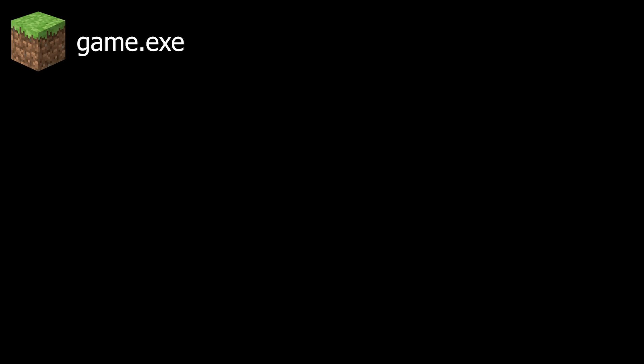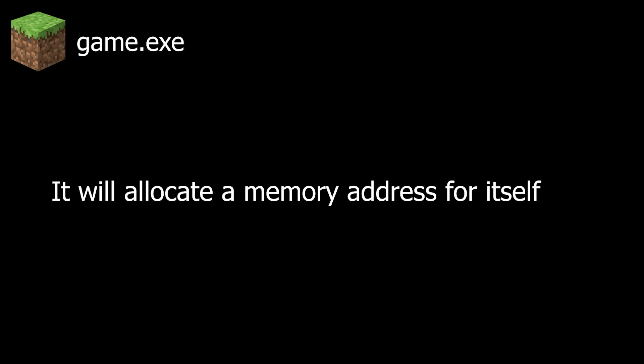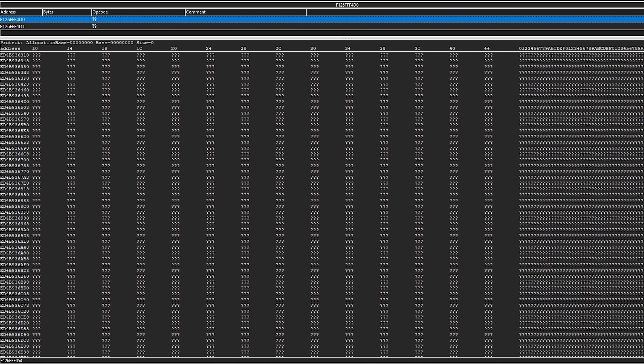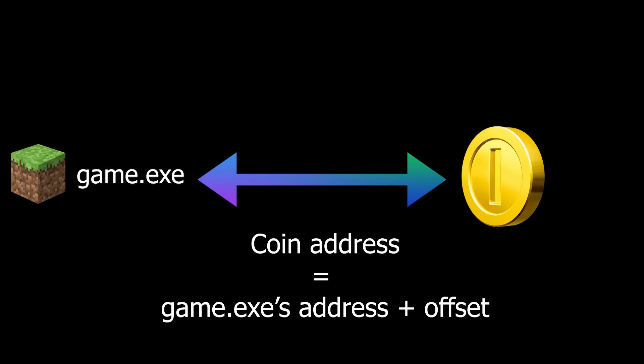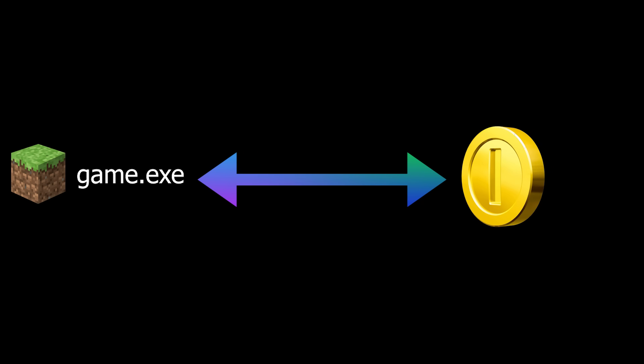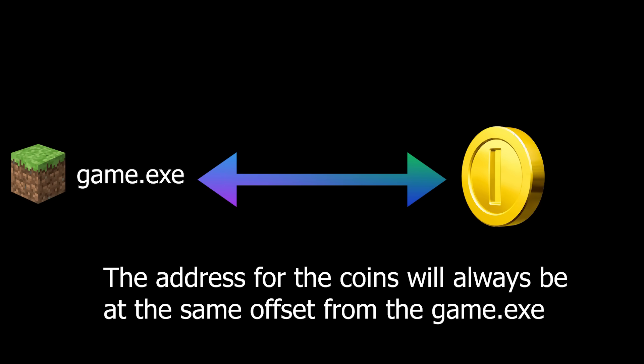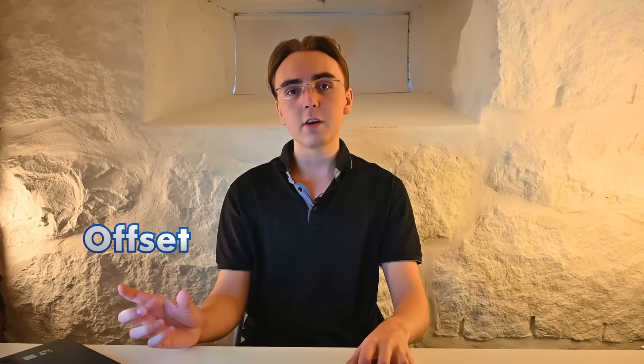Imagine you have a game called game.exe. If you open the game, it will allocate a memory address for itself in the memory currently available. If this game has coins, then every single memory address where the coins are located will be at a fixed offset from the address where the program allocated itself. And no matter how many times the game is closed and reopened, the coins will always be at the same offset distance relative to the initial address.